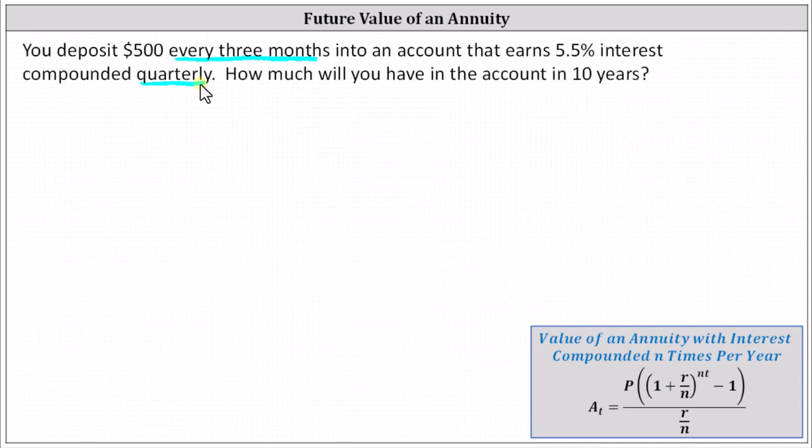This is important because this is what's needed in order to use the savings annuity formula below. Where A sub T is the amount after time T, P is the periodic payments or deposits, R is the annual interest rate, N is the number of compounds per year, and T is the time in years.